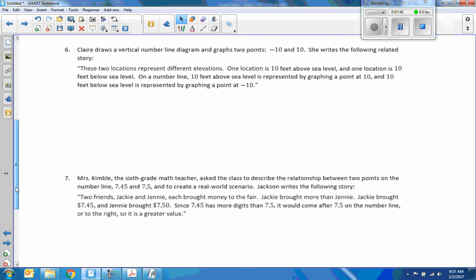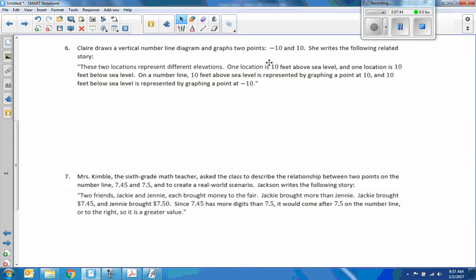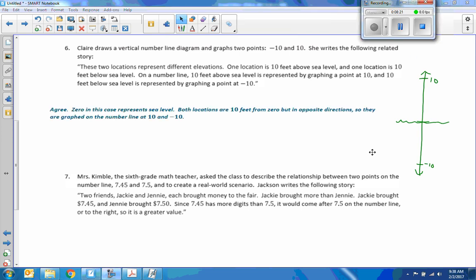Number 6. Claire draws a vertical number line diagram and graphs two points, negative 10 and 10. So let's do that. So here is a vertical number line. Let's put negative 10 here and 10 here. She writes the following related story. These two locations represent different elevations. One location is 10 feet above sea level. So let's say the sea level is here. And one location is 10 feet below sea level. On a number line, 10 feet above sea level is represented by graphing a point at 10. And 10 feet below sea level is represented by graphing a point at negative 10. So this one's agree. Zero in this case represents the sea level. So we can draw a zero there. Both locations are 10 feet from zero but in opposite direction. So they are graphed on the number line at 10 and negative 10. And it's true. All right. Next question.